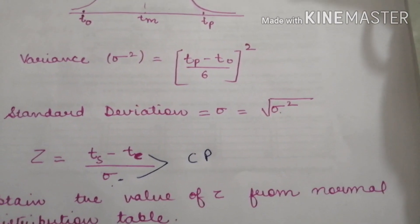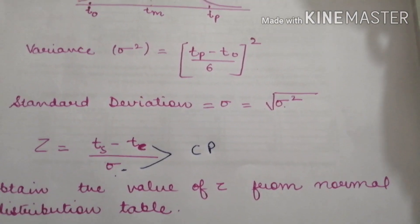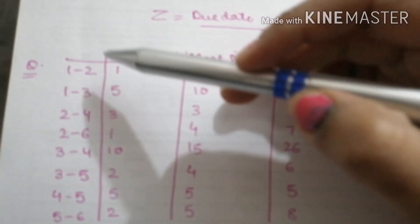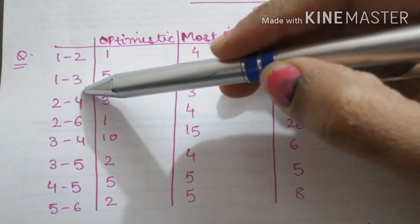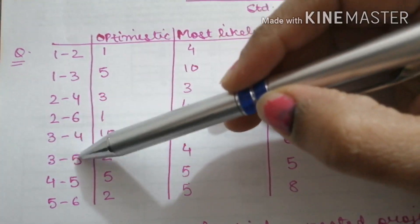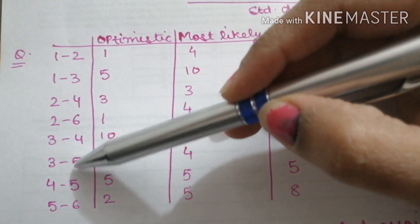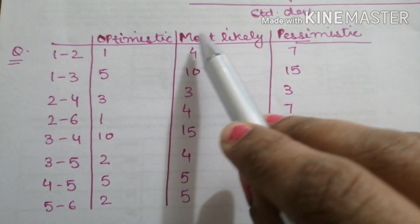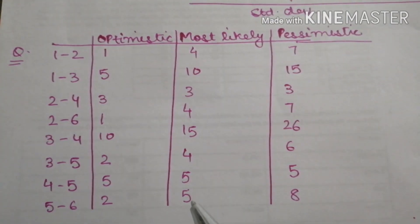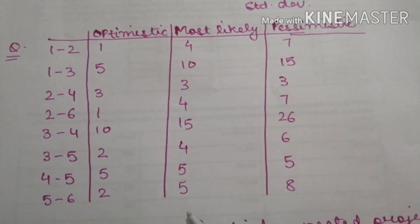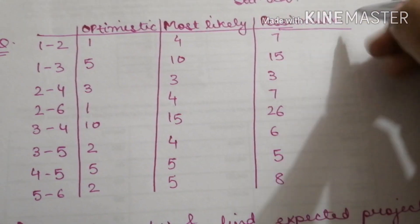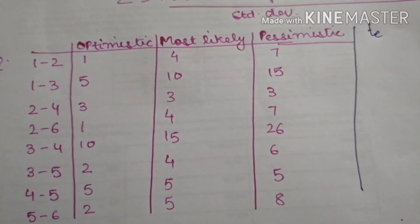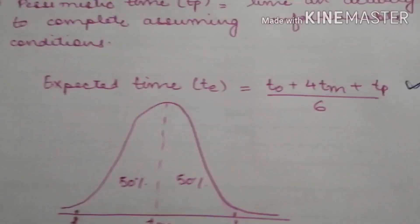Let us understand this with the help of an example. We have a question with activities 1 to 2, 1 to 3, and so on — 8 activities in total. For every activity, we are given the optimistic time, most likely time, and pessimistic time. We will calculate the expected time period using the formula.